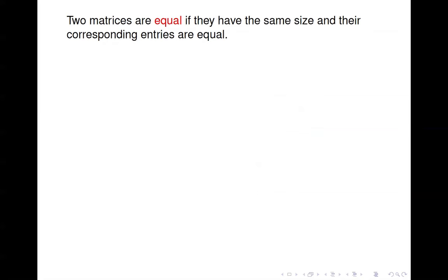We say that two matrices are equal if they have the same size — so the same number of rows and same number of columns — and their corresponding entries are equal. So the 1,1 entry in one is equal to the 1,1 entry in another. In general, the ijth entry in one is equal to the ijth entry in the other.